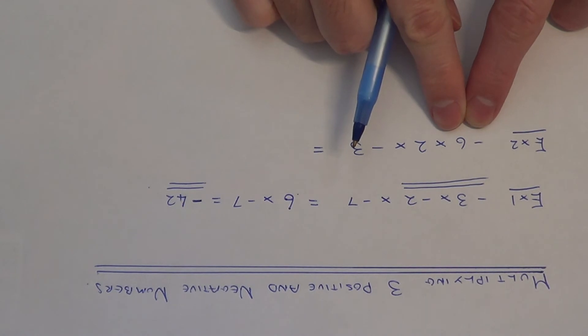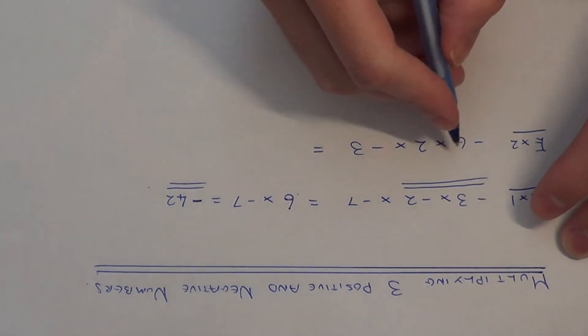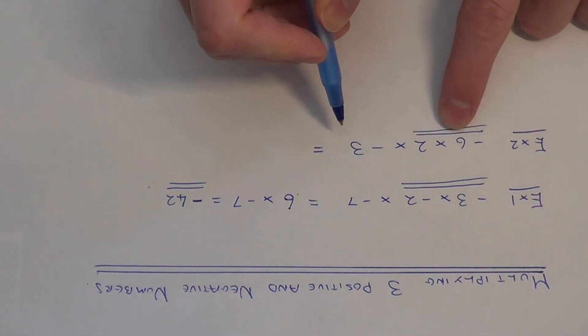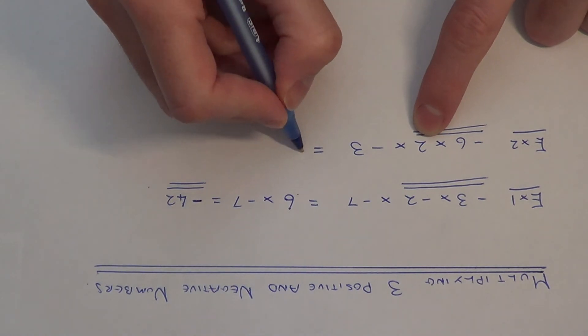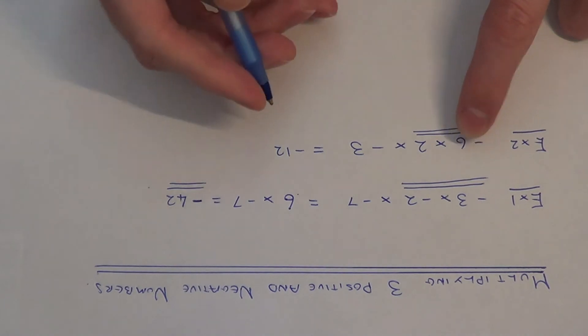Let's look at our second example. This time we have minus six times positive two times minus three. The first thing we need to do again is work out minus six times positive two. This gives us minus twelve because a negative times a positive is a negative answer.